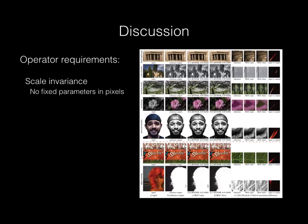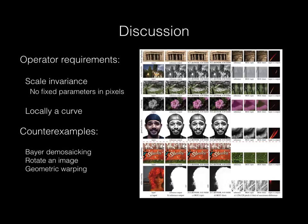The other important property is that for non-trivial patch size, the operator should be approximately a curve. I say non-trivial because if you choose a 1x1 patch size, meaning no downsampling, every operator is a curve. Empirically, we found that many useful photographic image processing operators do work well. However, we want to characterize the space of operators compatible with bilateral guided upsampling in a more fundamental way.